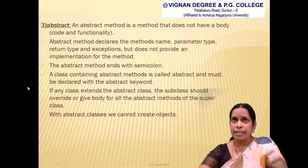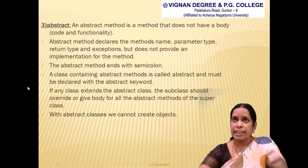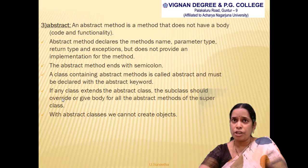The third access modifier is 'abstract'. An abstract method is a method that does not have any body — no body is written, so it ends with a semicolon. The syntax is: abstract returnType methodName(parameters). Abstract methods are generally written in the super class and must be overridden in the subclass — that is a rule. Any class containing abstract methods is called an abstract class.